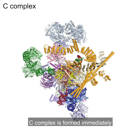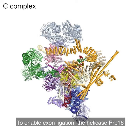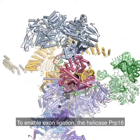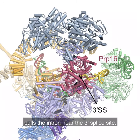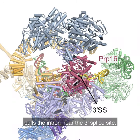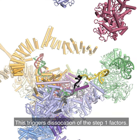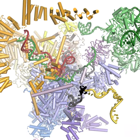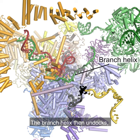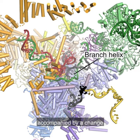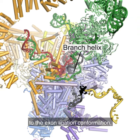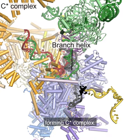C-complex is formed immediately after the branching reaction. To enable exon ligation, the helicase PRP16 pulls the intron near the 3' splice site. This triggers dissociation of the step 1 factors. The branch helix then undocks, accompanied by a change to the exon ligation conformation, forming C-star complex.